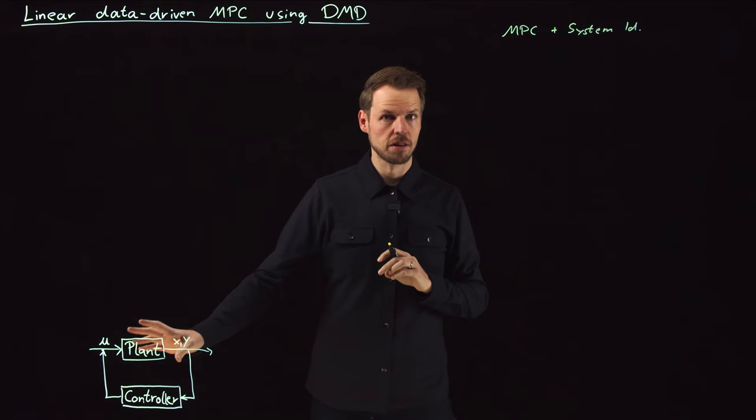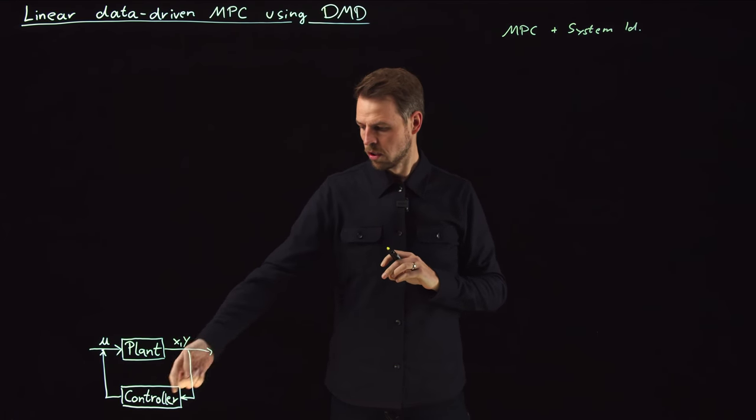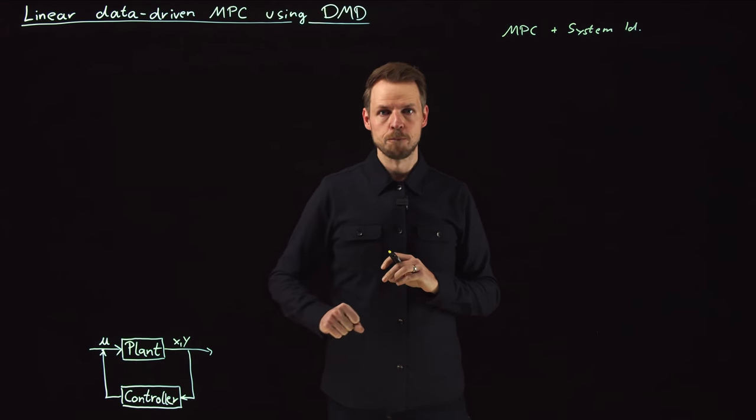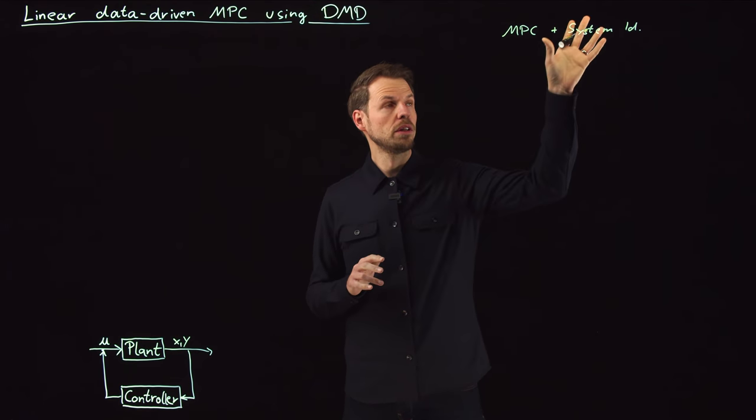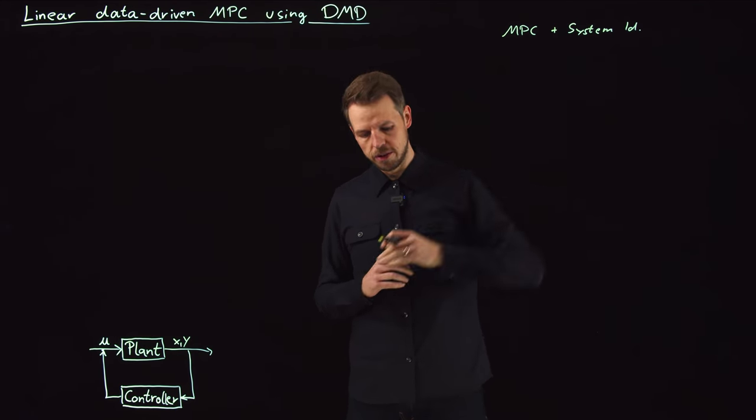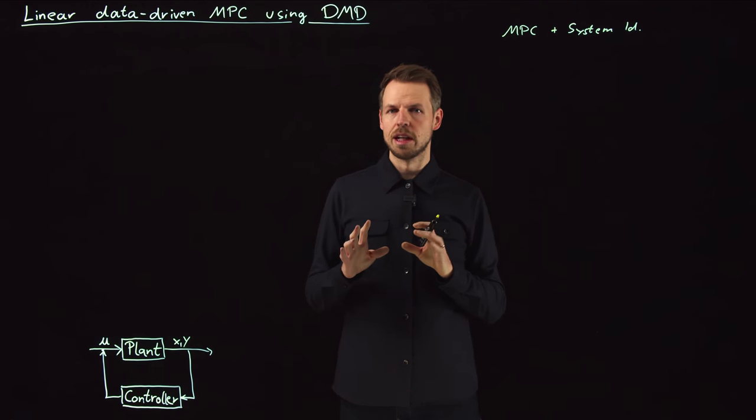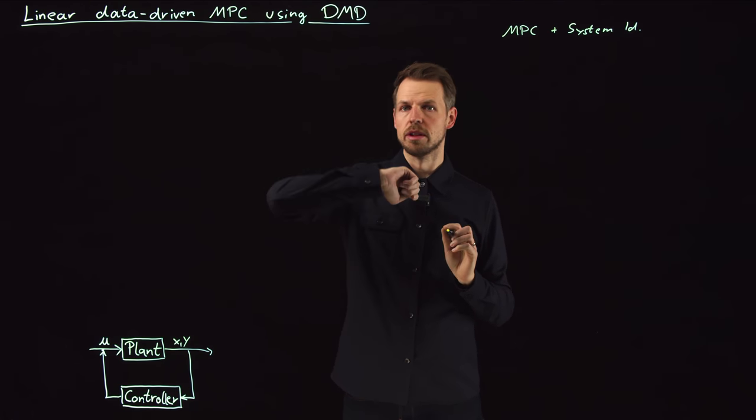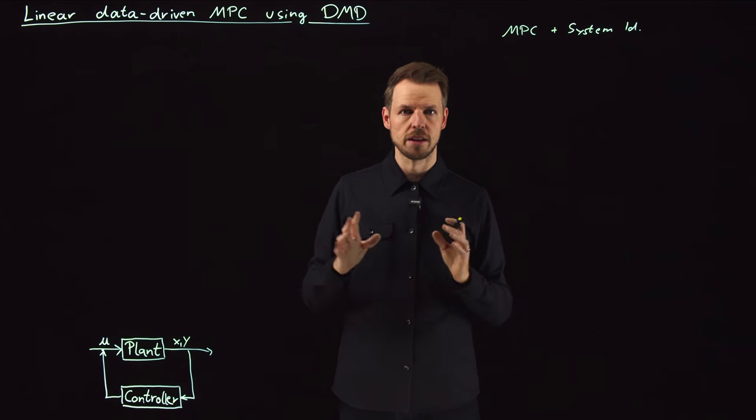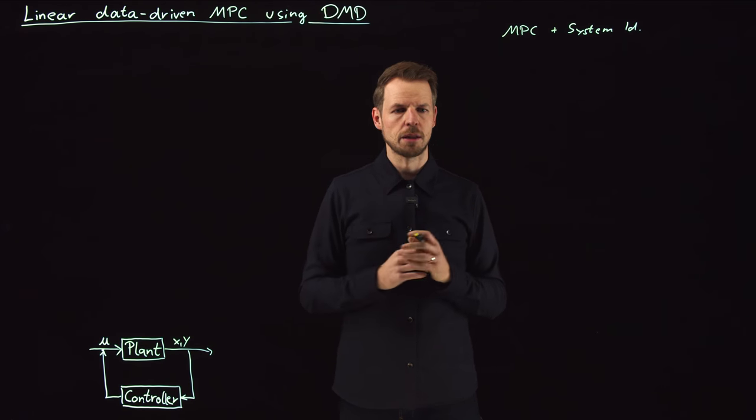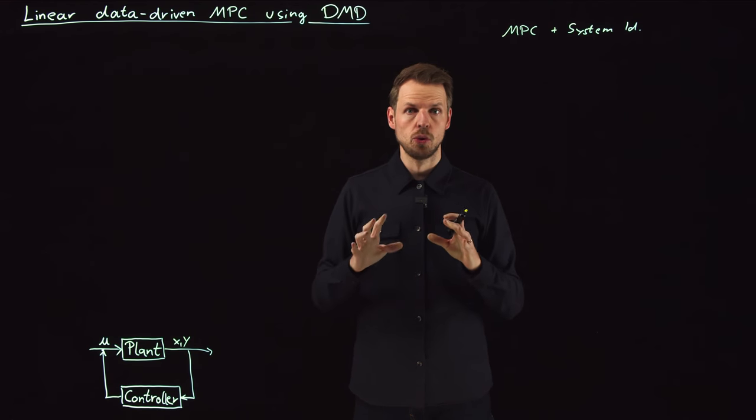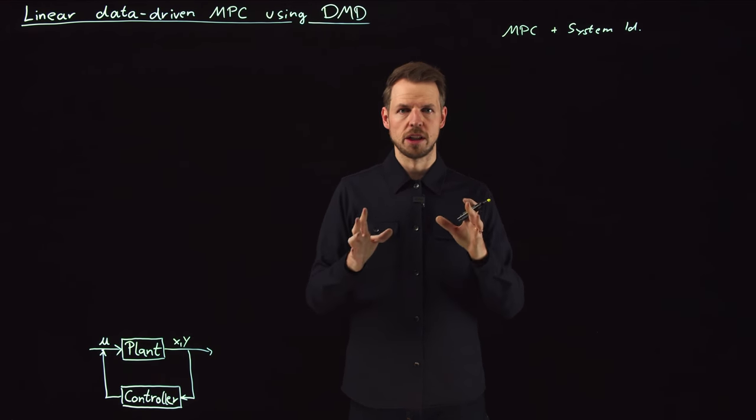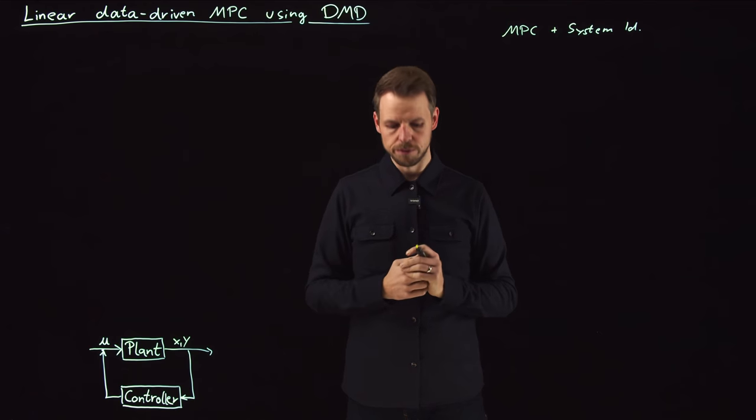So this is our task. Maybe we don't know the system. Maybe the system is too expensive to solve in real time or to solve the associated control problem in real time. And so we identify a system and then use MPC on the system. What I would like to use here, and this is already taken away in the title, I want to use dynamic mode decomposition or a certain extension thereof to realize this system identification in a linear fashion.